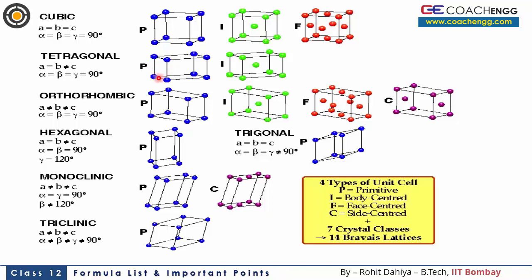There are some combinations possible and some not. The simple cube can be primitive, body-centered, and face-centered. The tetragonal crystal is primitive and body-centered. In the orthorhombic case, there are 4 cases: primitive, body-centered, face-centered, and end-centered. Geometrically, there are 14 types of lattices possible, and these combinations are known as Bravais lattices.